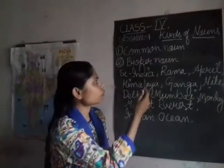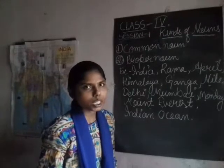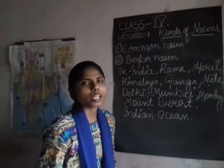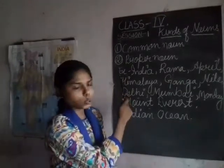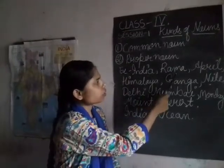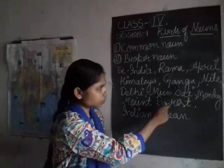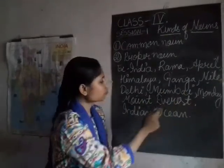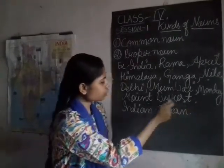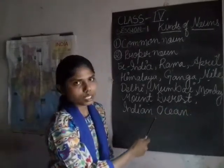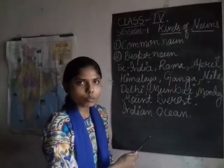Proper noun is the name of a particular person, place, thing, an animal or any bird. Some examples I have written over here: India, Rama, April, Himalaya, Ganga, Nile, Delhi, Mumbai, Mandi, Mount Everest, Indian Ocean. These are the examples of proper noun.